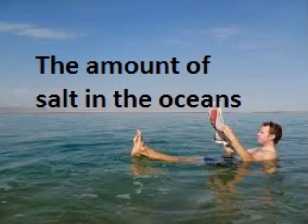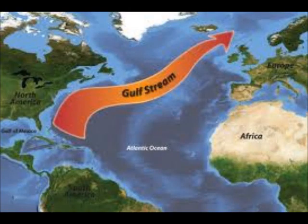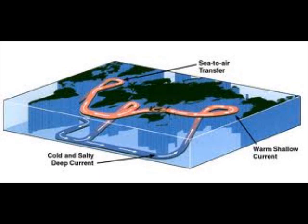The amount of salt in the oceans. The Gulf Stream runs up north, and as it does this, the water evaporates, leaving saltier water. The saltier water sinks, creating deep water currents. These deep water currents get replaced with less dense water currents.